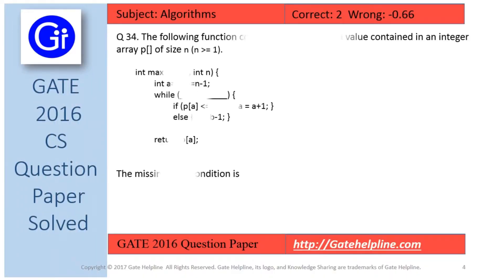And question number 34 is: the following function computes the maximum value contained in an integer array p of size n, where n is greater than or equals to 1. The missing loop condition is?